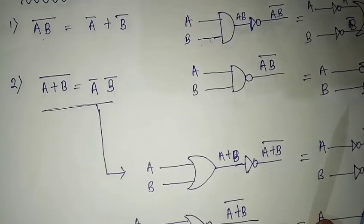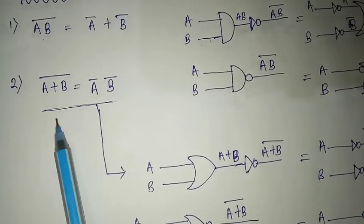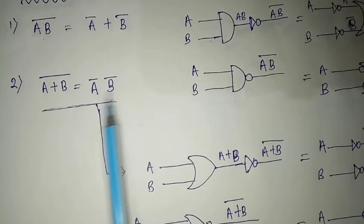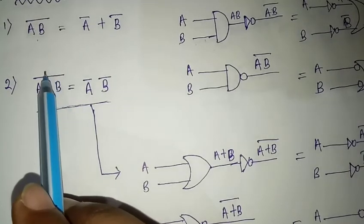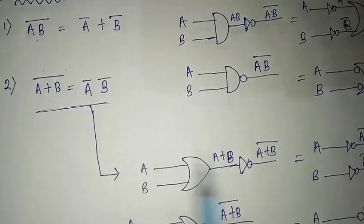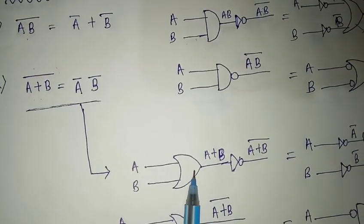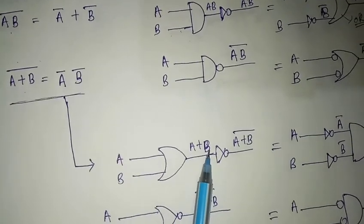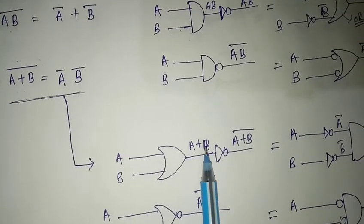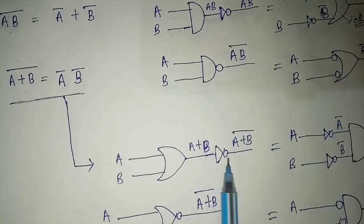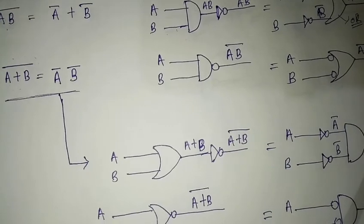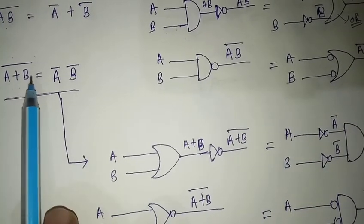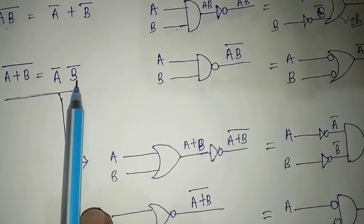For the next expression, (A+B)̄ = Ā · B̄. We take A and B as inputs, pass them through an OR gate to get A+B, and then pass through a NOT gate to get (A+B)̄. According to De Morgan's Law, (A+B)̄ = Ā · B̄.